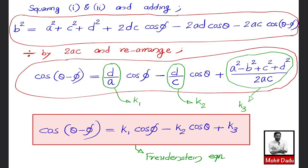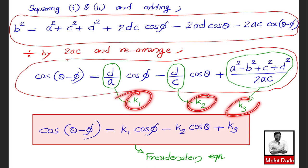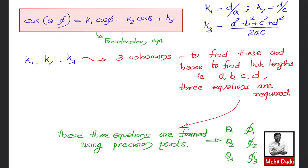The Freudenstein equation is used for synthesis — finding the dimensions of the mechanism. The four unknowns a, b, c, d reduce to three unknowns K1, K2, K3. To solve for these three unknowns, three equations are required, which are formulated at points called precision points.